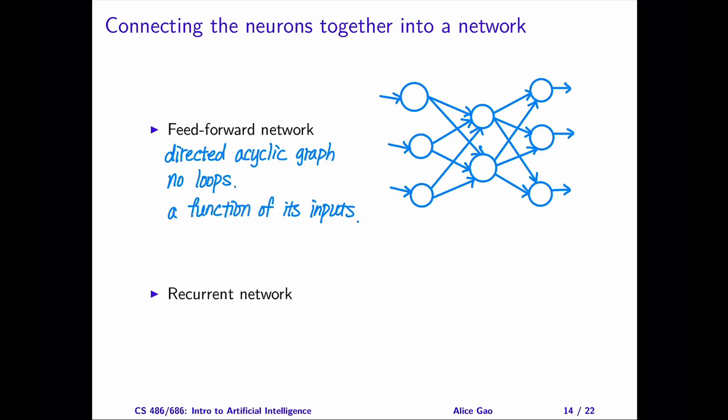In the feedforward network, the outputs are a function of its inputs. If you know the inputs, you can determine the outputs.